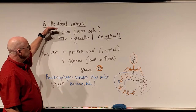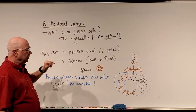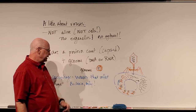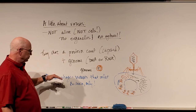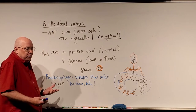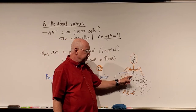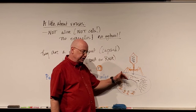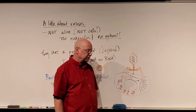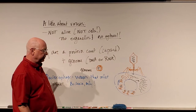Viruses are not alive. They are not cells. They don't have any cell machinery. All that they are is a protein coat called the capsid with a genome in it, and the genome can be DNA or RNA. There's a special group called bacteriophage that only infect bacteria. These viruses can inject their DNA, hijack the cellular machinery, incorporate their DNA into the genome, cause massive replication of viral particles, assemble them, kill the cell by rupturing it, and release all those viral particles.